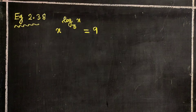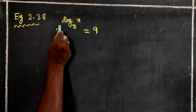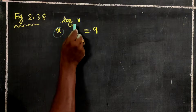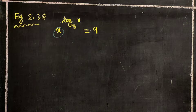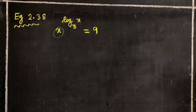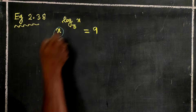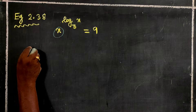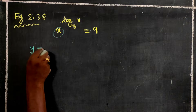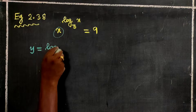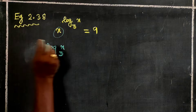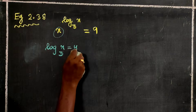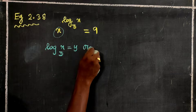How do we find x? We let y equal log x base 3. So y is equal to log of x base 3, and log of x base 3 is equal to y. Let's use this substitution.